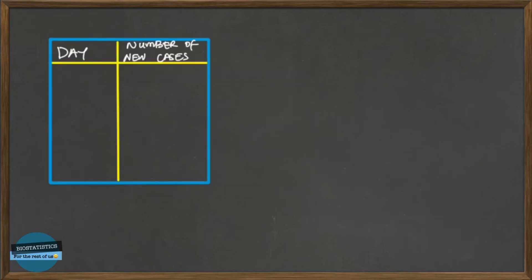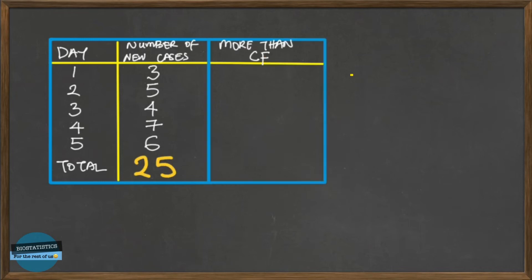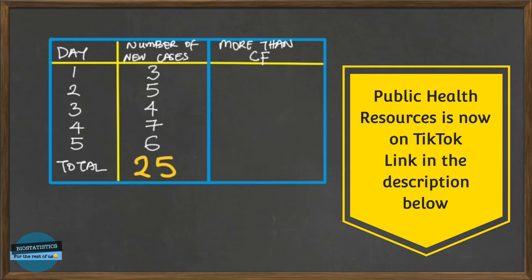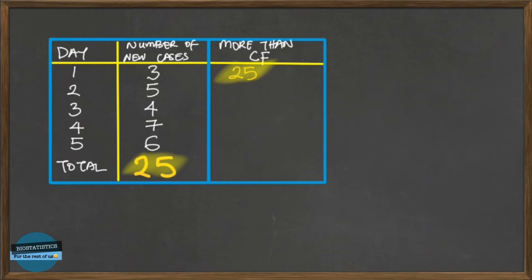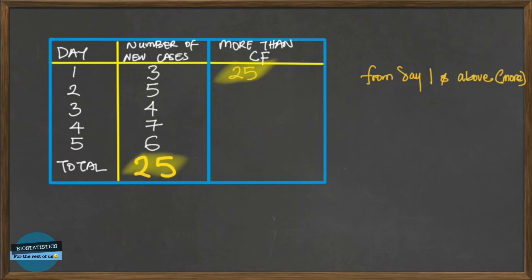Now let's use the same data for more-than cumulative frequency. The definition says it's the sum of frequencies from that value and above. For day one, we include day one all the way to day five, giving us 25 — the same as the total number of new cases. So for more-than cumulative frequency, we start with the highest cumulative frequency, which equals the total. For day two, we take out day one's frequency of three, leaving 22.